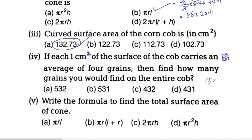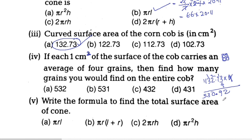Using the curved surface area of 132.73 cm², we calculate the number of grains. Multiplying 132.73 by 4 gives approximately 530.92, which rounds to 531. So the number of grains on the corncob is approximately 531. Option B is correct.